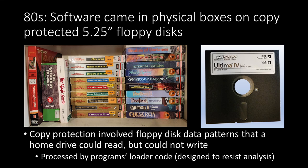Back in the 1980s, software came in physical boxes containing 5.25-inch floppy disks that generally had some kind of copy protection to keep you from duplicating the software. Copy protection involved floppy disk data patterns that you could read easily on your home drive but could not write with your home drive, and that asymmetry was at the heart of the protection scheme. These protection schemes would be processed by loader code designed to resist analysis.